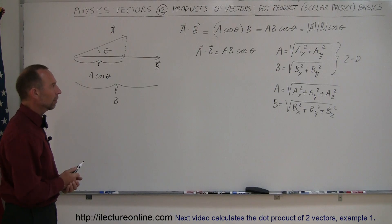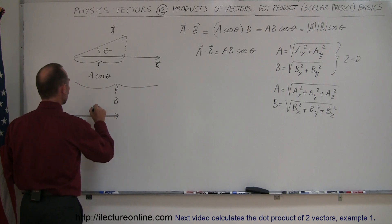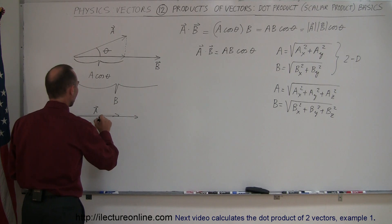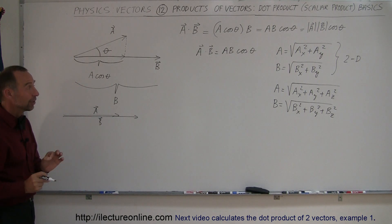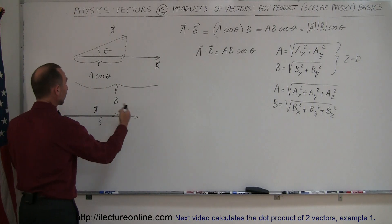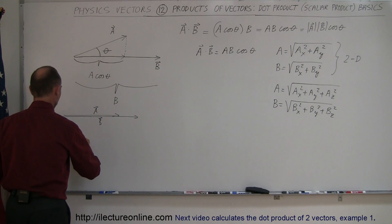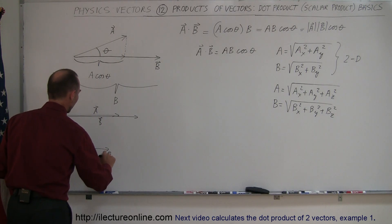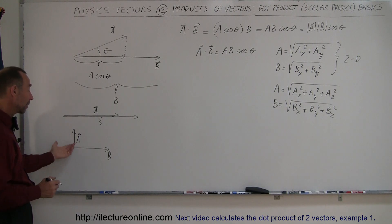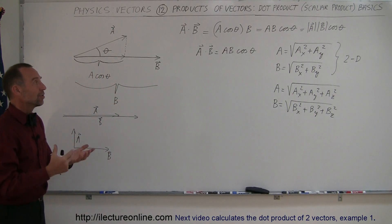What if the angle between them is zero? If vector A and vector B point in the same direction, the angle is zero and the cosine of zero is one, so the dot product is simply the magnitude of A times the magnitude of B. What if they're perpendicular? Then the projection of A onto B would have zero length, the dot product is zero — and of course the cosine of 90 degrees is zero, giving the same result.